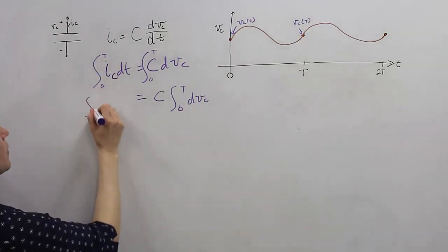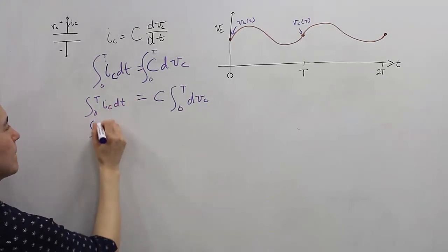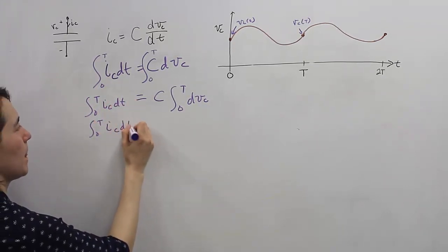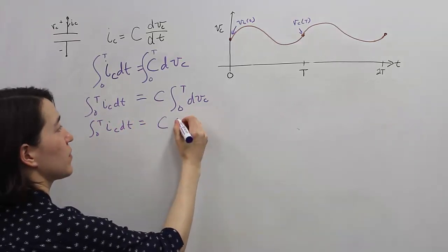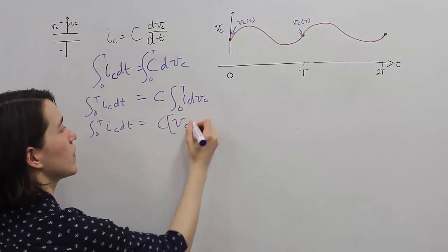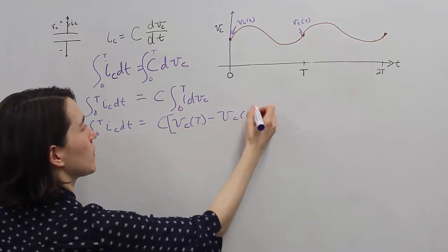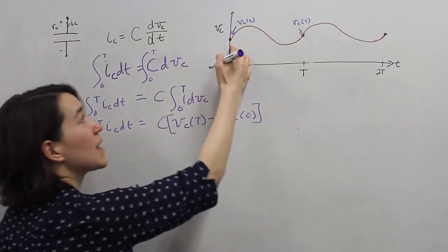Now, this will simplify, because it's just a 1, so this becomes v_c of T minus v_c of 0. And notice this is the beginning point and end point.